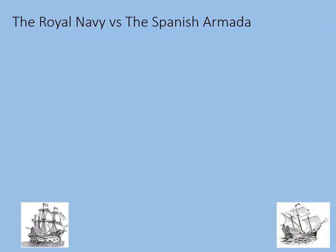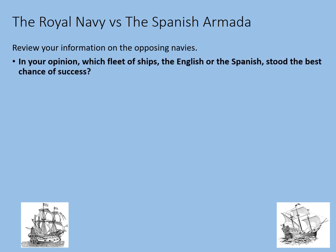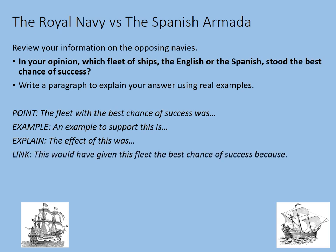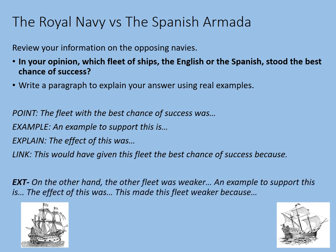We should now have a list of details showing differences between the English Royal Navy and the Spanish Armada. Review your information on the opposing navies. In your opinion, which fleet stood the best chance of success? Write a paragraph to explain your answer using real examples. Make a point, give an example, explain it, then link it back to the question. As an extension, give the other side as well and add balance to your answer. This should take about five to ten minutes.